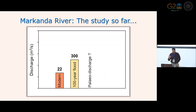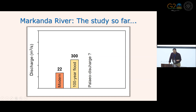To summarize so far: the modern Markanda River had a mean discharge of 22 cubic meters per second. A 100-year flood — which has a probability of occurrence of 0.01 — would have a discharge of 300 cubic meters per second. Our interest now is to know what the discharge was during the time of Harappan civilization — that means we want to know the paleo discharge.